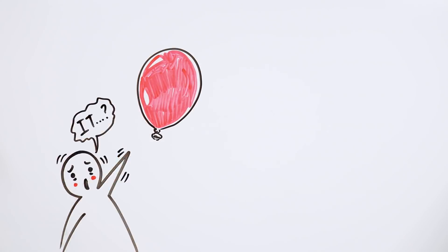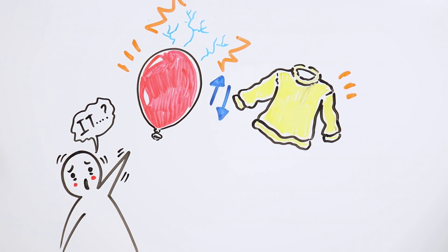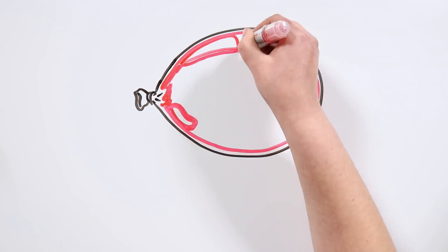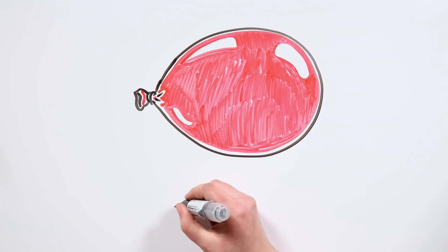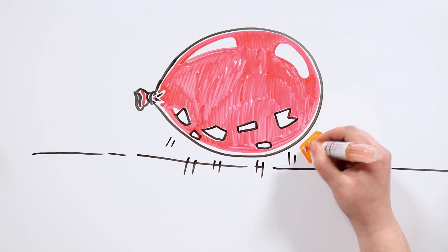One of the most famous experiments is to get an inflated balloon and rub it in a wool sweater. This way we load it with static electricity, so that if we later put it close to small pieces of paper, the paper will stick to the balloon.